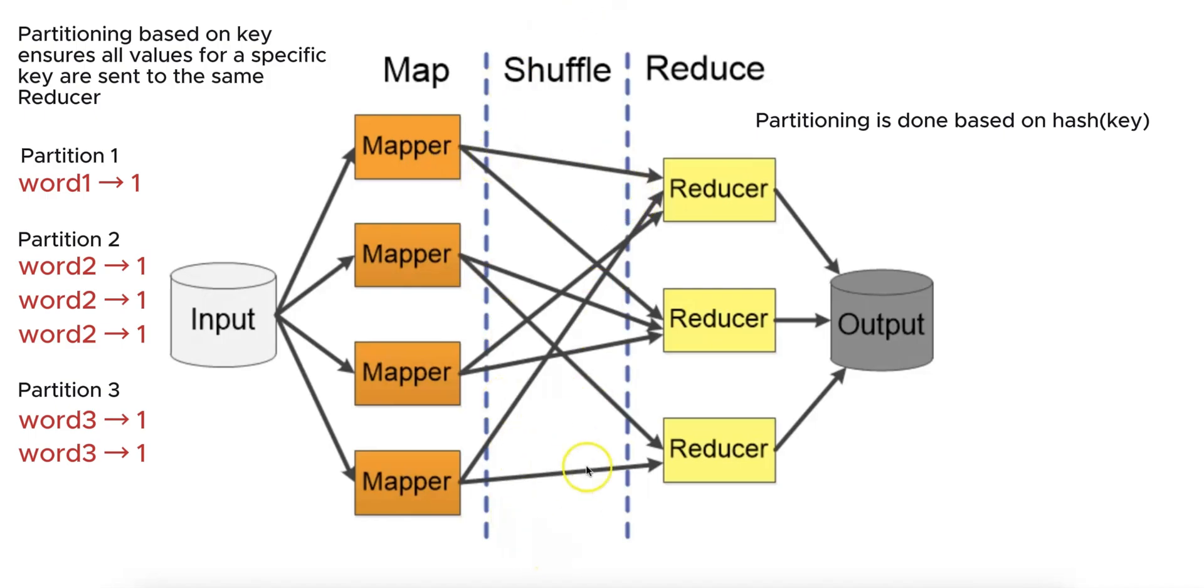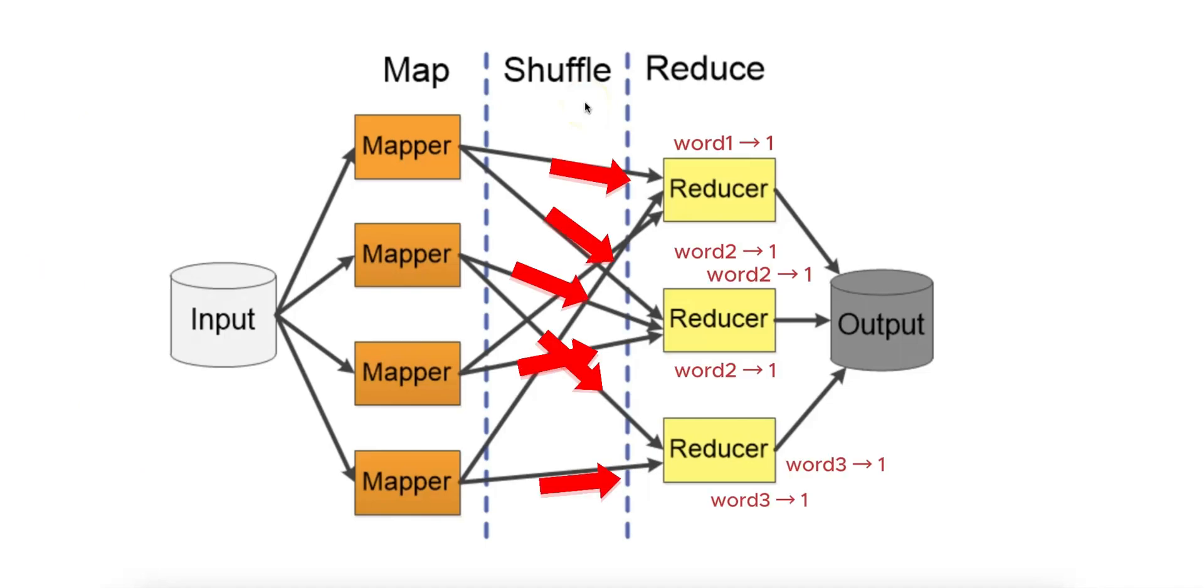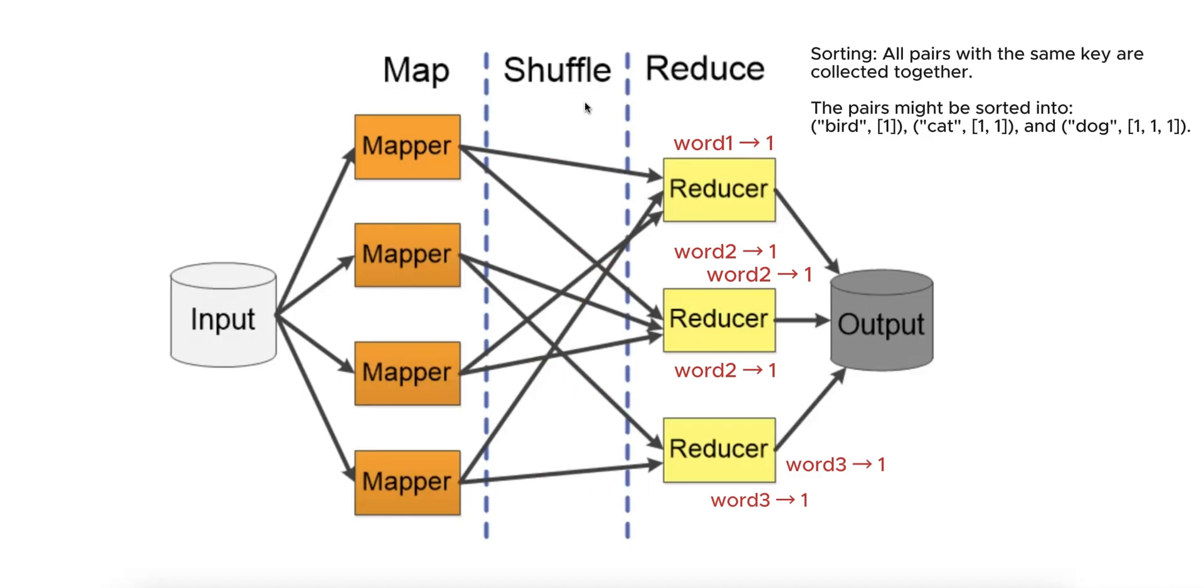Phase 2 is Shuffle and Sort. This is a critical phase in the MapReduce framework and happens between Map and Reduce phases. Once the mapping is completed, the output needs to be grouped by the keys. Shuffling refers to the movement of intermediate key-value pairs from mappers to reducers. All values corresponding to the same key are grouped together during this process. Sorting happens concurrently, ensuring that the keys arrive at the reducer in a sorted order. This step is important because the reduce function often assumes the keys are processed in a sorted manner.